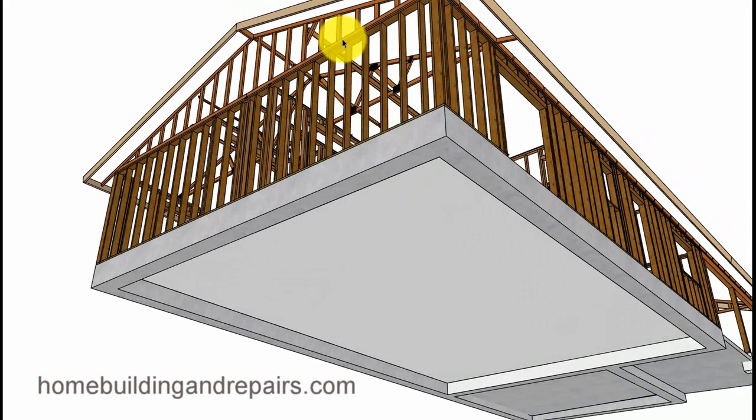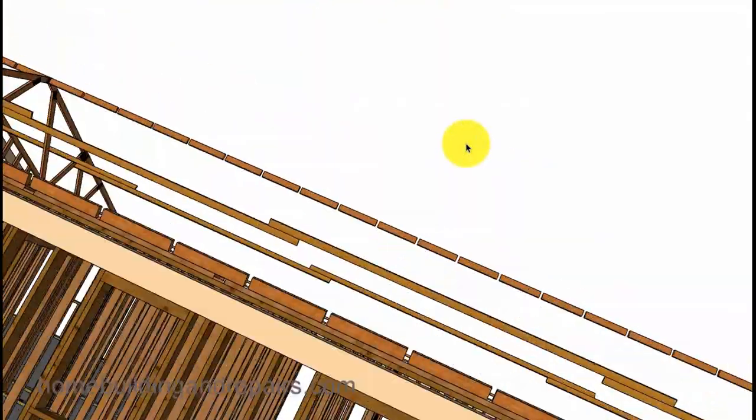Now, one of the reasons for trusses is that you don't need any interior footings. Again, most of the time, depending upon the bearing points. The bearing point on a truss like this would be at each side. No need for interior footings, which can save the builder a lot of money.